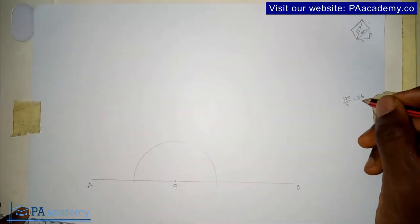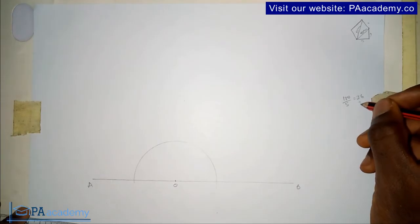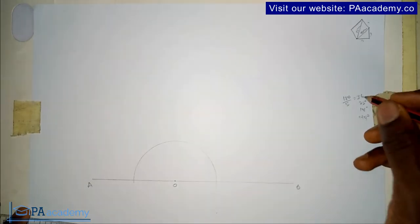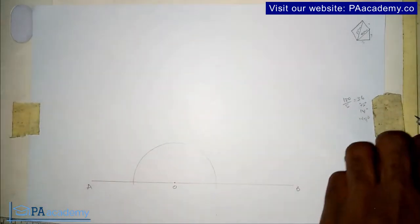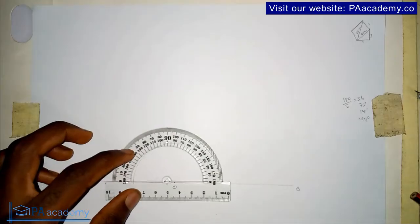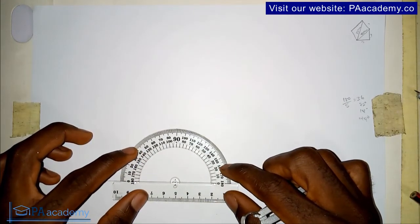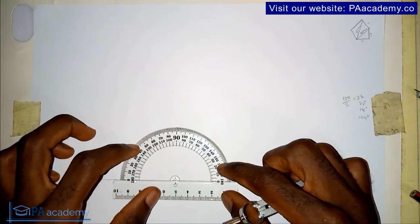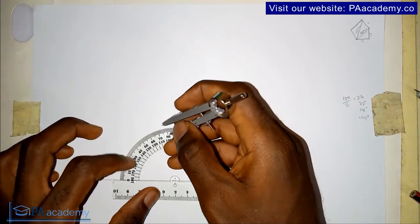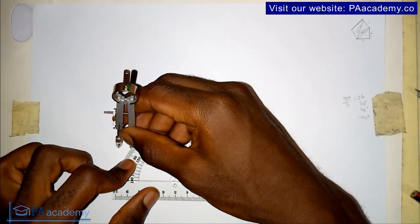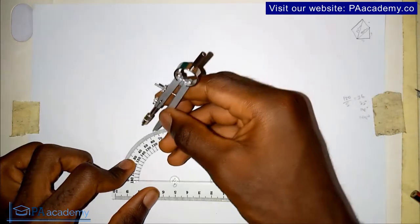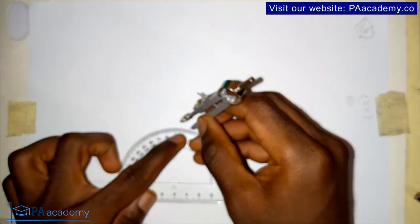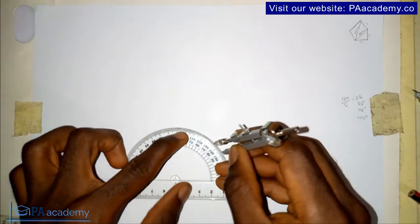So you are going to be marking it at 36 degrees, 72 degrees, 108 degrees, and 144 degrees — adding 36 each time. Once I put in my protractor, I can easily mark those points. So this is 36, then 72, 108, and 144.